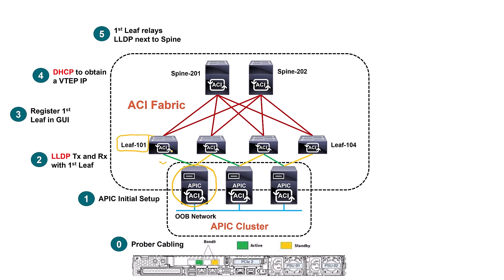Next, leaf 101 relays LLDP messages to the first spine. Whichever spine receives that first LLDP message gets discovered. The spine is discovered thanks to LLDP relays originated by the APIC, sent to the leaf, and forwarded all the way to the spine and back. This entire discovery process repeats itself for all remaining switches within the ACI fabric until every device is registered.